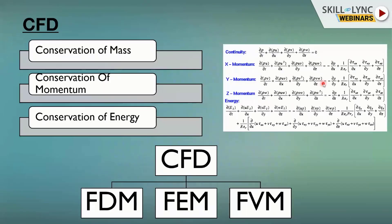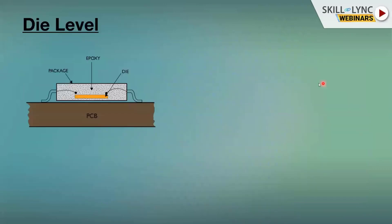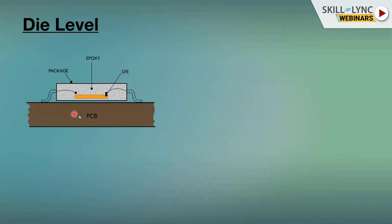CFD can be used to analyze electronic components at the chip level, IC level, board assembly, and system level. At the die level, consider a MOSFET — if you look inside it, there is a PCB, and on top of that PCB the MOSFET or SCR is placed, with the die embedded in epoxy. This whole assembly is known as the package. The die is the heat source.